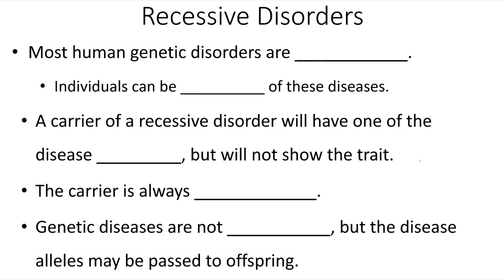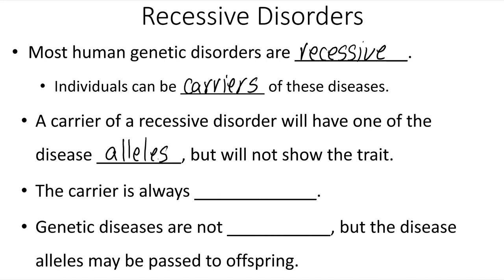Most human genetic disorders are recessive, meaning that individuals can be carriers of these diseases. A carrier of a recessive disorder will have one of the disease alleles but will not show that disease trait. The carrier will always be heterozygous, and often these carriers will have no idea that they are carriers for this genetic disorder.